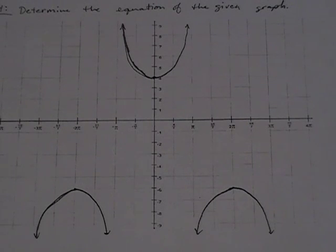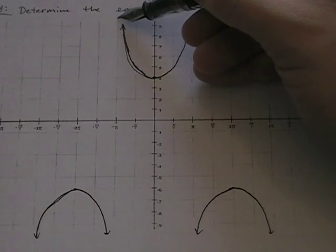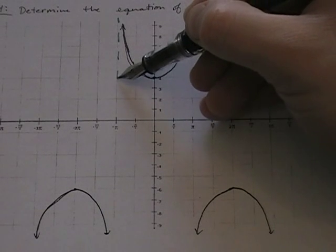I've been asked to determine the equation of this graph, and the way I look at this, I know because it's a bunch of parabola looking things that this is either a secant or a cosecant, and there's a vertical asymptote here.